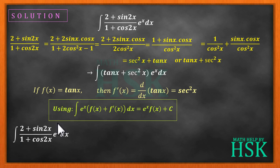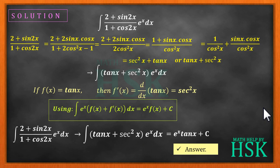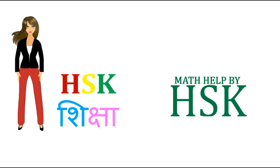So we take the given integral. This integral can be written as integration of (tanx + sec²x) * e^x. Applying this result, we can write that it is equal to e^x * tanx + C. So this will be my required answer.